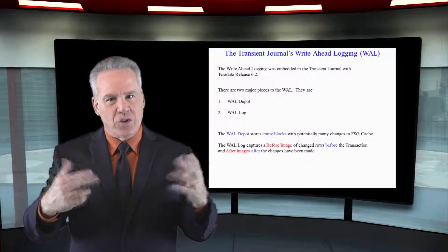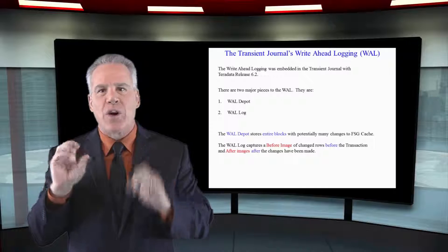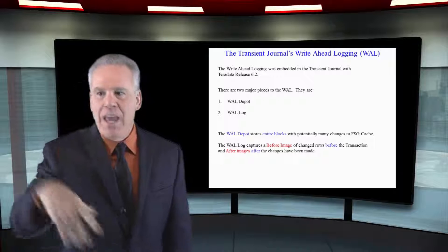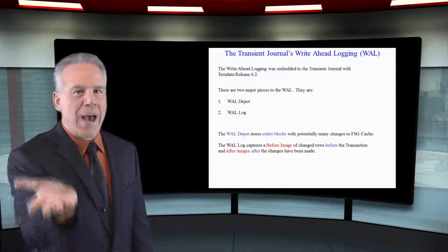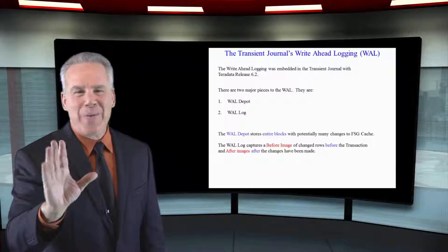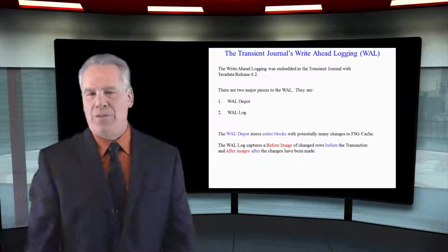We know that the Transient Journal always takes a before picture of every row it's going to change on an amp, and every amp has their own Transient Journal so that they can roll back any row to the way it was before if there are any problems.